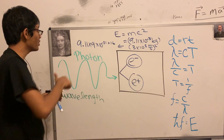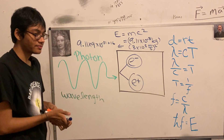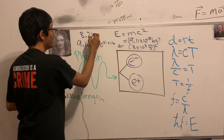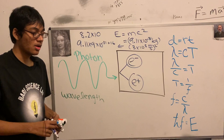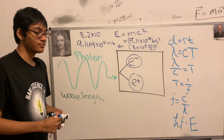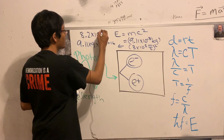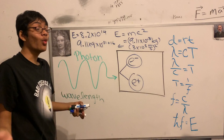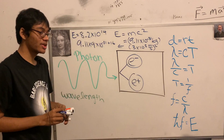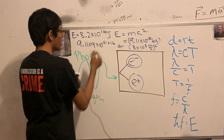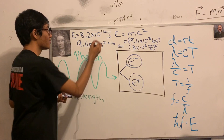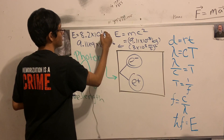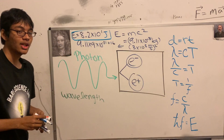The total energy required to produce an electron is approximately 8.2 times 10 to the minus 14 joules. The unit joules is named after James Joule — though we're not certain of all the biographical details offhand. That is the energy required to produce one electron.